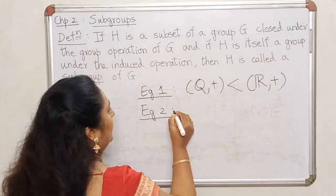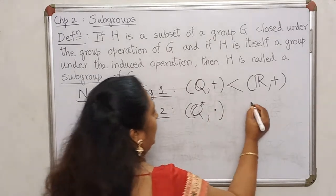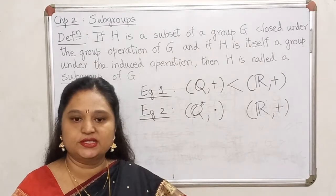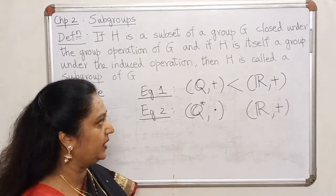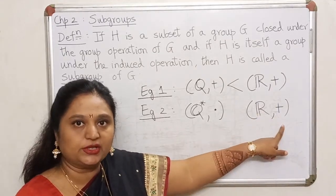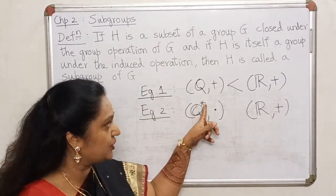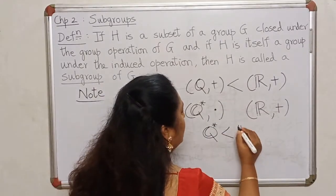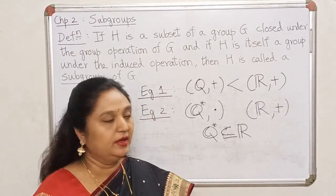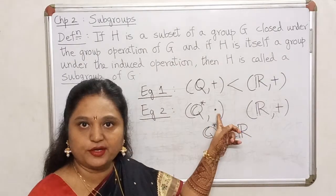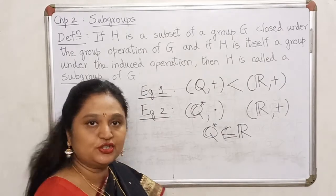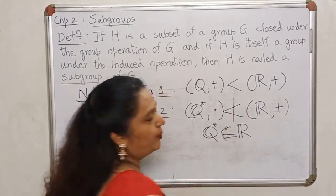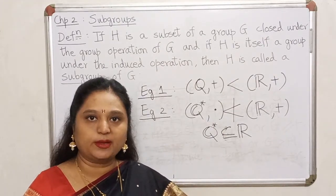On the other hand, look at this example: Q* with respect to multiplication and the set of real numbers with respect to addition. Pause your video and think about whether Q* under multiplication is a subgroup of R under addition. The answer is: although Q* is a subset of R, it is not a subgroup because the operations are different. The subset has to be a group on its own with respect to the same operation. Because the operations are different, Q* under multiplication is not a subgroup of R under addition. In the next lecture, we will look at some more examples of subgroups. Thank you.